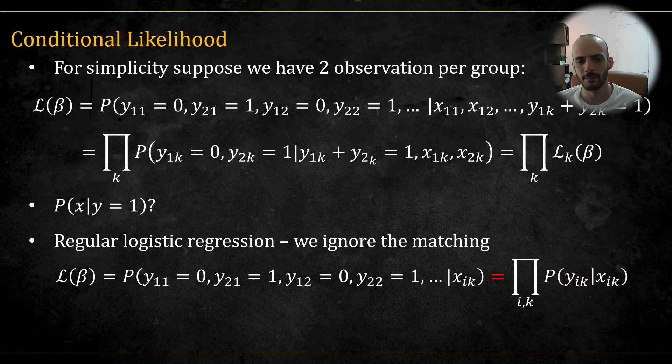Finally, note the contrast between the conditional logistic regression and the regular logistic regression. In the regular logistic regression, we ignore the matching and treat each observation as if it is drawn independently. And so we can break the total likelihood into the product of the individual likelihood.